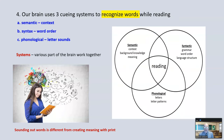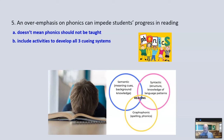Our brain uses three cueing systems to recognize words. You see the word and you recognize it automatically. Yes, we use letters and letter patterns to recognize words, but we also use semantics or context, and syntax — grammar, word order, language structure. All these work together to enable us to recognize words quickly and effortlessly during the act of creating meaning with print. An overemphasis on phonics can impede students' progress — you're atrophying the other two cueing systems. This does not mean phonics should not be taught; it means you need to include all three in developing students' ability to recognize words.